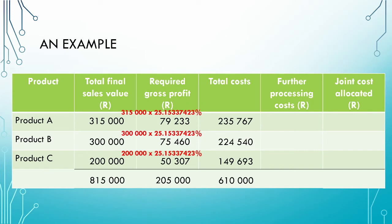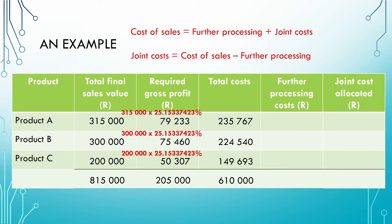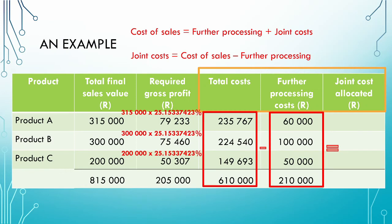For step two, total cost of sales equals further processing costs plus joint costs. We have calculated total costs in step one and have been given the further processing costs in the scenario. Therefore, the only unknown is the joint costs, which we calculate as total cost of sales less further processing costs. Subtracting the further processing costs from the total costs gives us the joint costs allocated to each product. The total joint costs allocated amounts to 400,000 Rand, which is exactly the amount we needed to allocate.